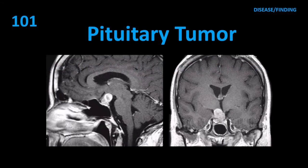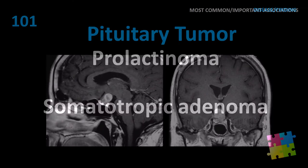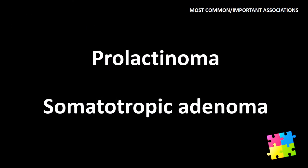Item 101: Most common pituitary tumor — prolactinoma. Also: somatotropic adenoma.